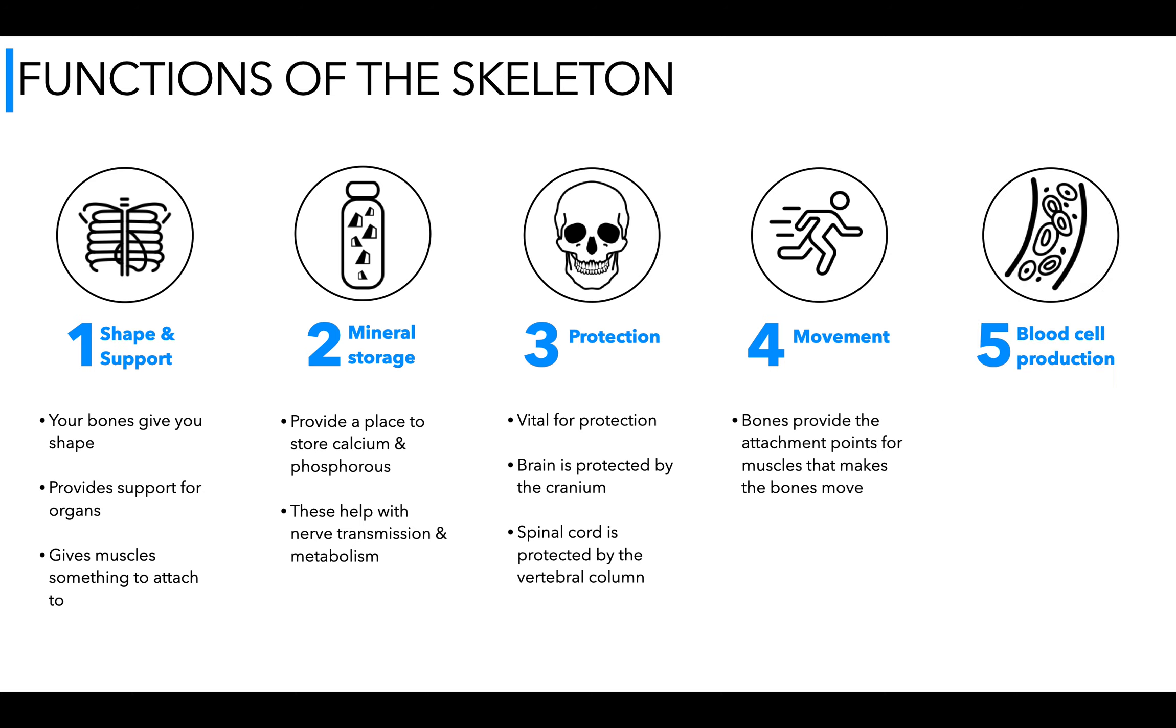And five, we have blood cell production. Bones are lightweight because they are not solid and in the center of the bone we have a core of marrow and this is where we have red and white blood cells being created. So just a quick recap of functions with a few basic points about them.